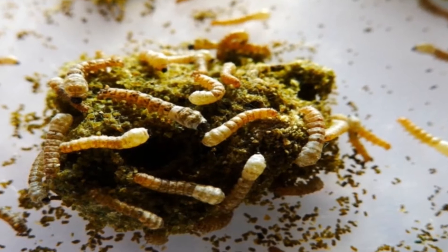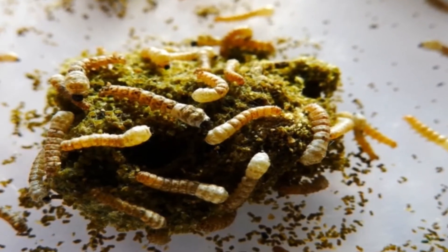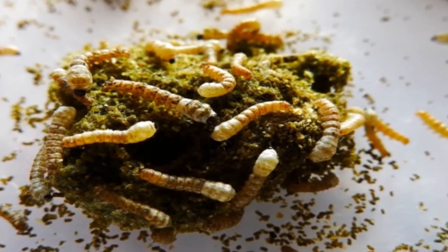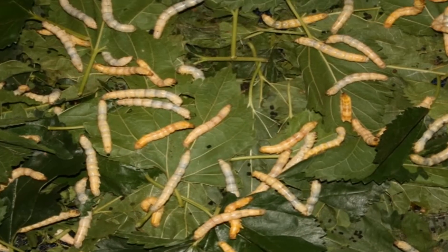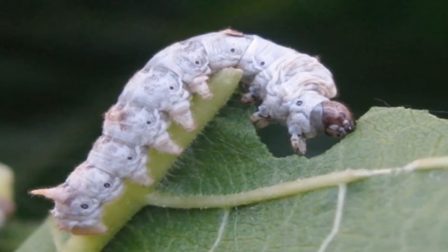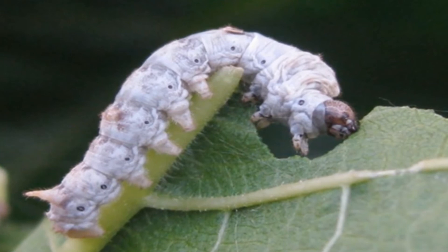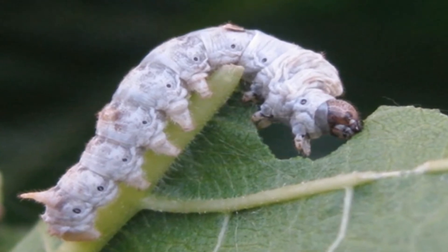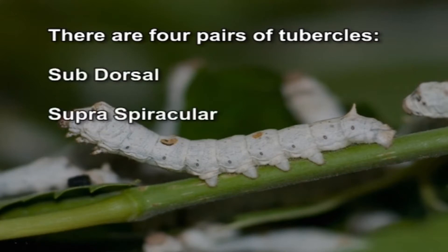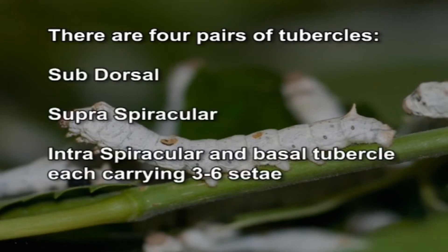The newly hatched larvae are black or dark brown in color, measuring about 3 mm in length. They are commonly called ants or keigo in Japanese. The head is large and the body is densely covered with bristles. There are four pairs of tubercles — subdorsal, supraspiracular, intraspiracular and basal tubercle — each carrying 3 to 6 setae.